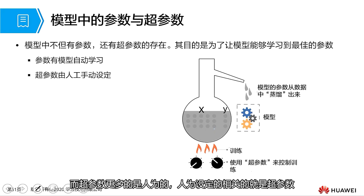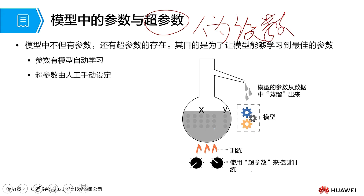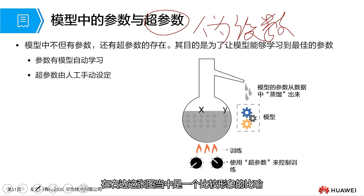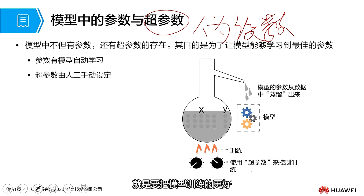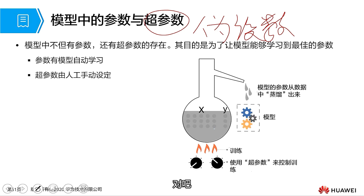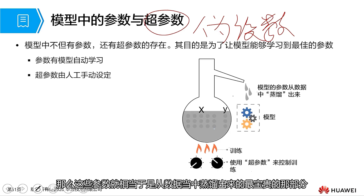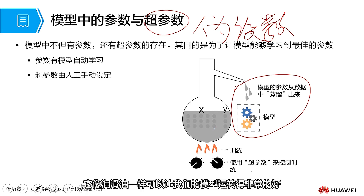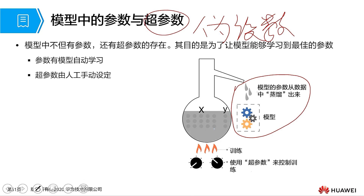In a model, there are not only parameters but also hyperparameters. Parameters refer to the components of your model — the weights themselves. Hyperparameters are more human-made, manually set numbers. A vivid metaphor: during the training process, we want to train the model better, and our parameters should be very good. Because of these valuable parameters, our model can adapt to a variety of environments. These parameters are like the most precious part distilled from the data — like lubricant that makes our model run very well.